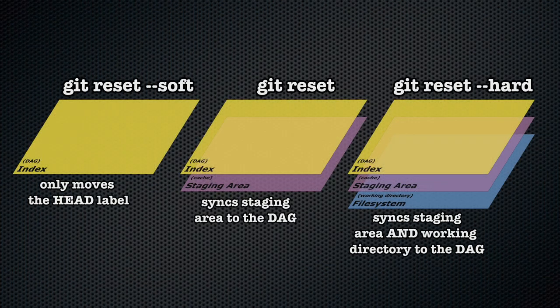A soft reset will reset changes from the DAG but will leave them in the staging area. A mixed reset will reset changes from the DAG and the staging area, but will keep the changes in the working directory — as in the files on your disk.